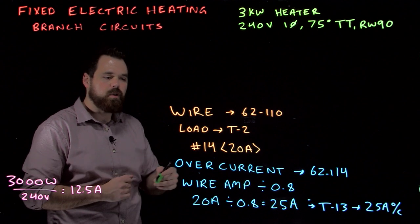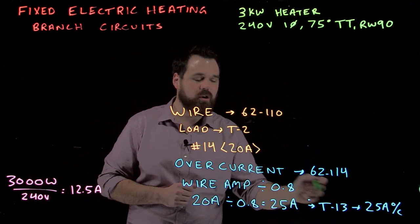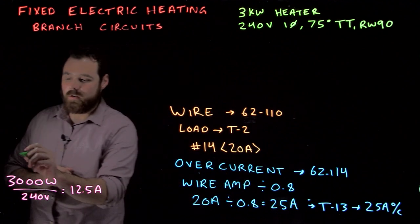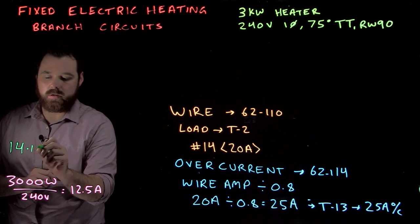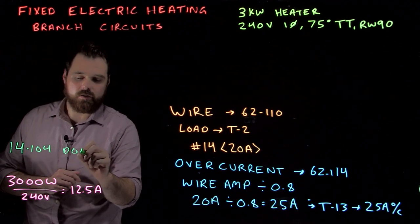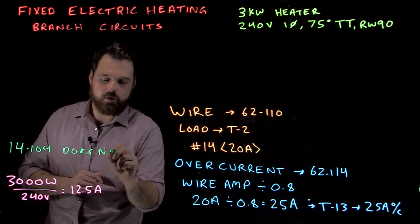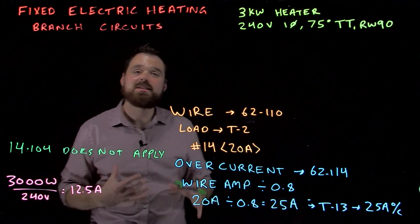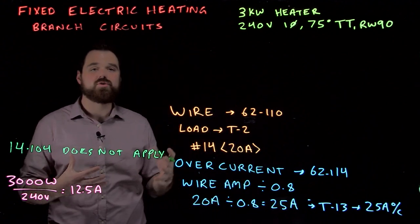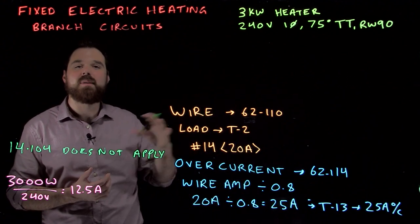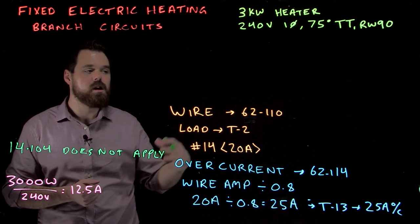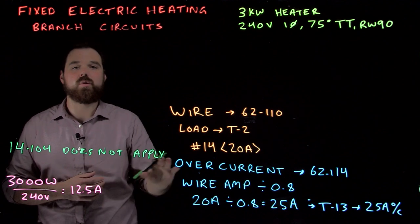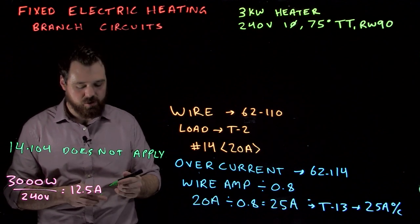Now, something has happened here. We have taken a 14 gauge and put it on a 25 amp wire. 14104 does not apply. The reason is section 62 is a supplementary section in the code book, which means it supplements or amends the general requirements of the code. So because section 62 says we can do this, we can do it and we don't need to worry about the breaker size on that number 14.